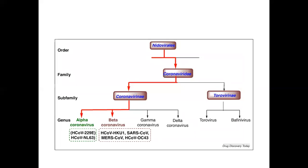The COVID-19 virus falls into the order Nidovirales, family Coronaviridae, and subfamily Coronavirinae. It has various genera including alpha coronavirus, beta coronavirus, gamma coronavirus, and delta coronavirus.